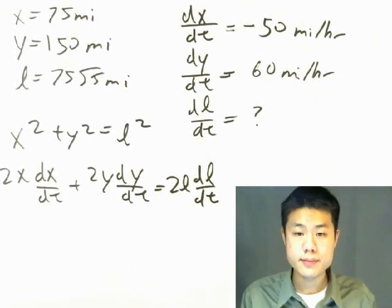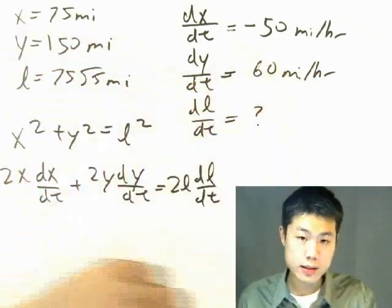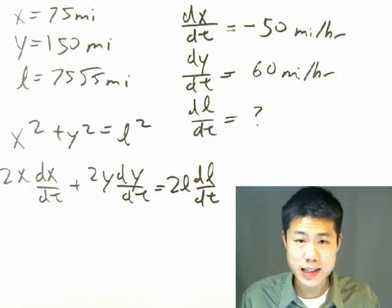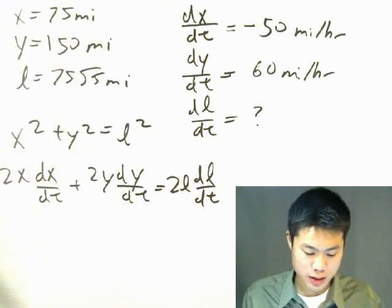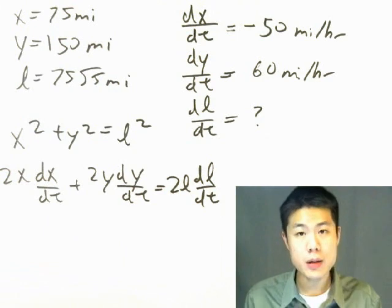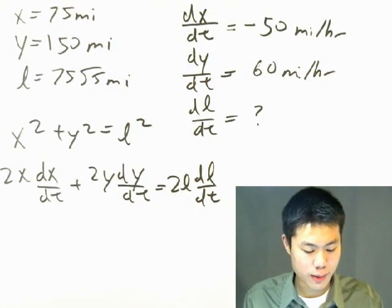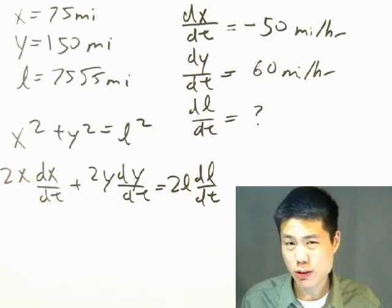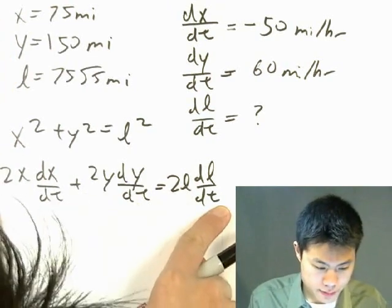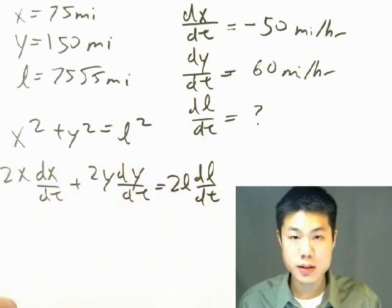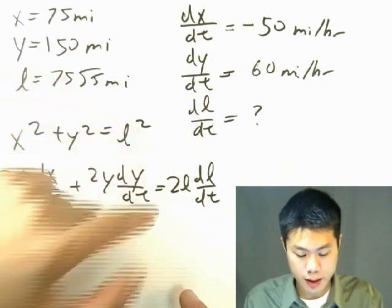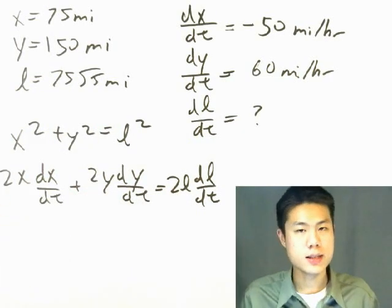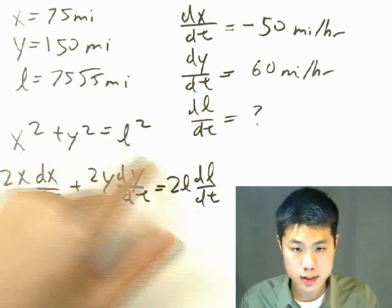Normally you would not solve for all the variable values before writing the equation — it's better practice to first write the equation implicitly, differentiate both sides, and then see what values you need. In this case I went a bit out of order, but the approach still works. Also, even though you want dL/dt, do not take the square root of both sides first to isolate L — just differentiate directly, as it's much less tedious.